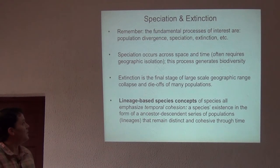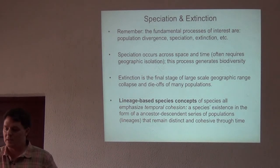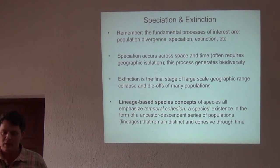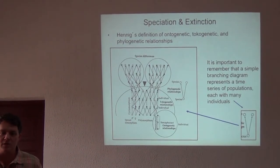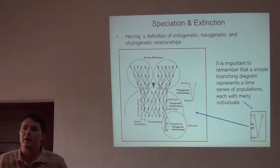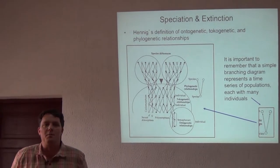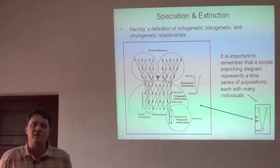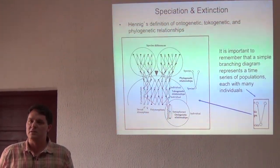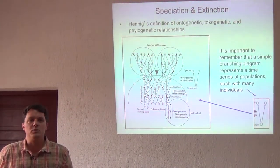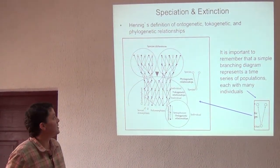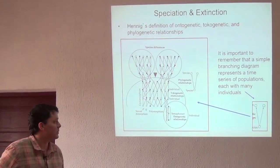These are just some final notes, basically the same things I just said. I want to show you these figures, which is a classic figure from a famous person who founded the field of cladistics and phylogenetic systematics, which is Willy Hennig, a German who in 1966 published this famous book.